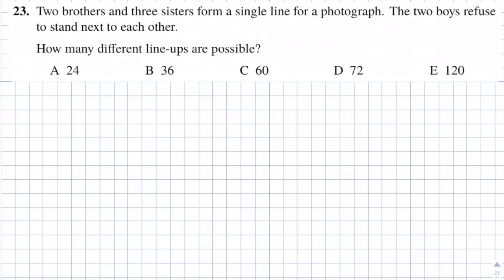Question 23. Two brothers and three sisters form a single line for a photograph. The two boys refuse to stand next to each other. How many different lineups are possible? The answers are: A is 24, B is 36, C is 60, D is 72, and E is 120. There are five people in total, so five places.